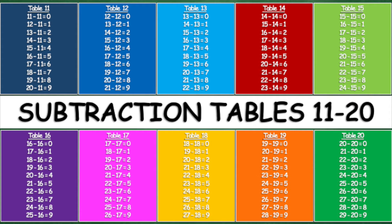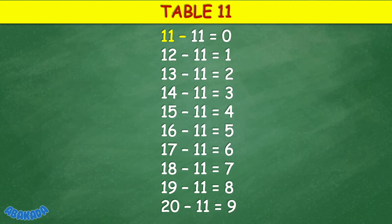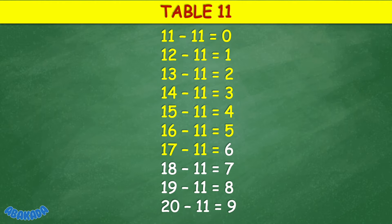Subtraction tables 11 to 20. Table 11: 11 minus 11 equals 0, 12 minus 11 equals 1, 13 minus 11 equals 2, 14 minus 11 equals 3, 15 minus 11 equals 4, 16 minus 11 equals 5, 17 minus 11 equals 6, 18 minus 11 equals 7, 19 minus 11 equals 8, 20 minus 11 equals 9.